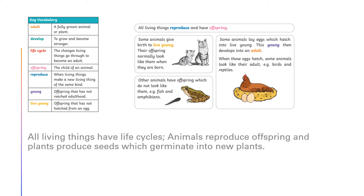All living things reproduce and have offspring. Some animals give birth to live young, and their offspring normally look like them when they are born. Other animals have offspring which do not look like them — for example, fish and amphibians. Some animals lay eggs which hatch into live young, and this young then develops into an adult. When these eggs hatch, some animals look like bear adults — for example, birds and reptiles.